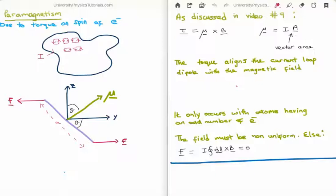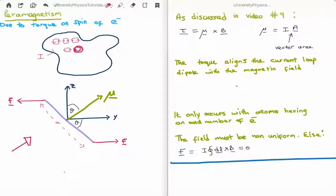We saw in a previous video that any current loop can be approximated as the sum of many rectangular loops. For a single such loop, some components will have no torque and others will have torque, making the loop turn and aligning the magnetic moment as well. From video number 9, the torque due to an applied magnetic field is the cross product of the magnetic dipole moment and the applied magnetic field, where the magnetic dipole moment is the product of the current and the vector area.